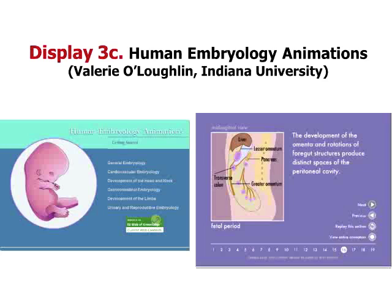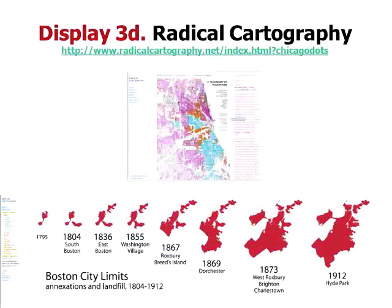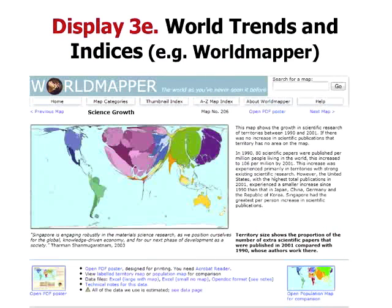Valerie O'Loughlin has a great set of animations anyone can use. There's a professor at Penn State who has muscular system websites that thousands of people use. Radical cartography — seeing ethnicities in Chicago, seeing Boston grow over the past couple of centuries. Visualizing data online, seeing data in the World Mapper tool — a database of databases of science growth, pancreatic cancer deaths, primary education spending. Go to the World Mapper and look at how much the US spends on education compared to India or China, or US science growth compared to Asia and Europe.